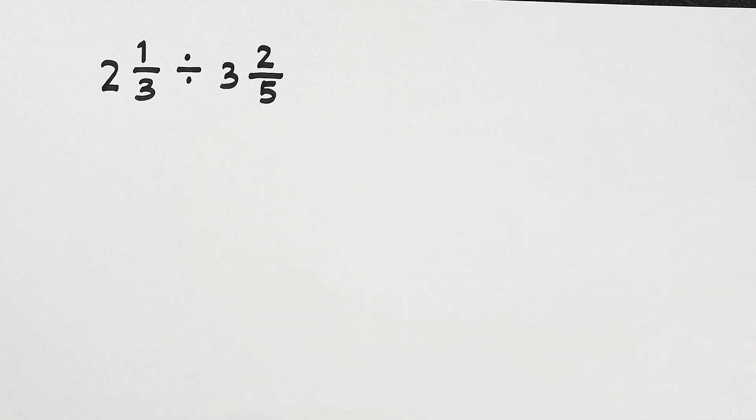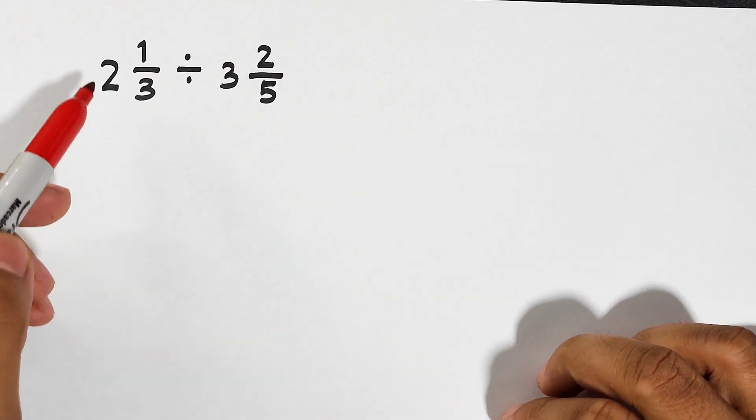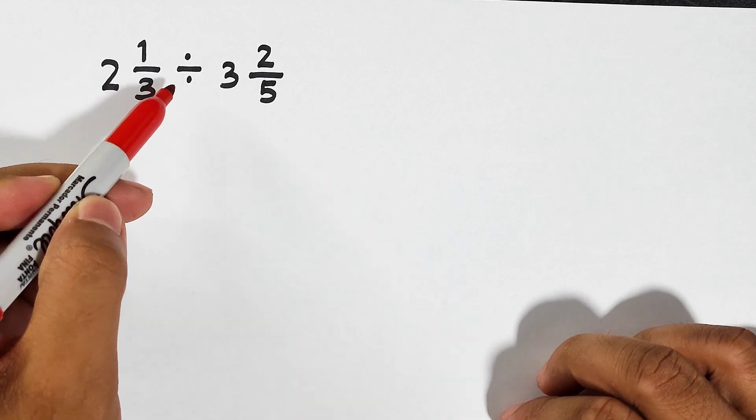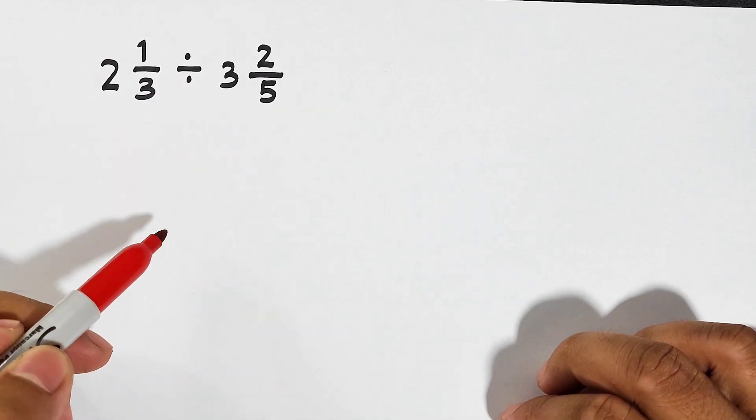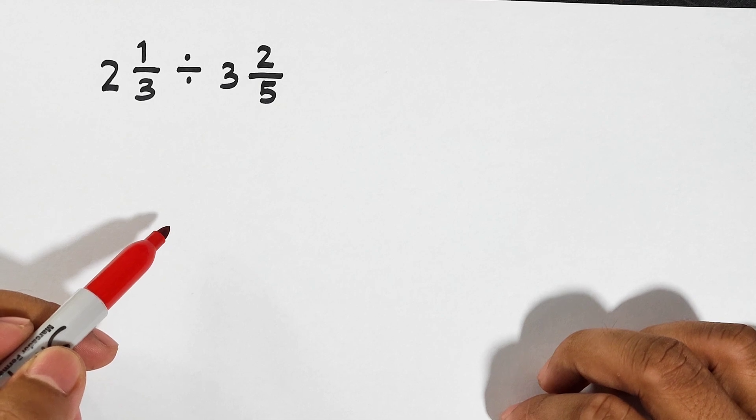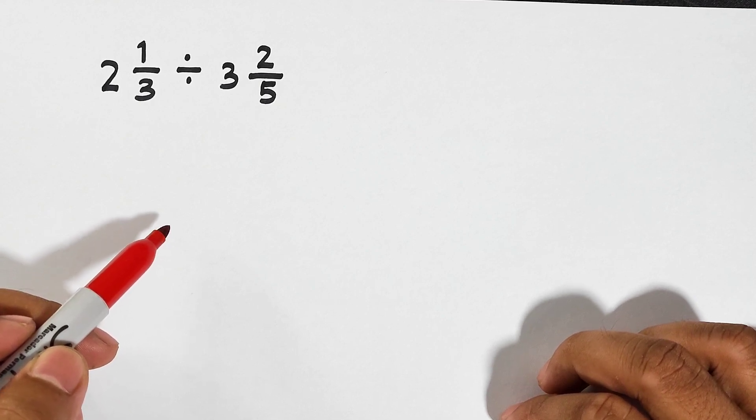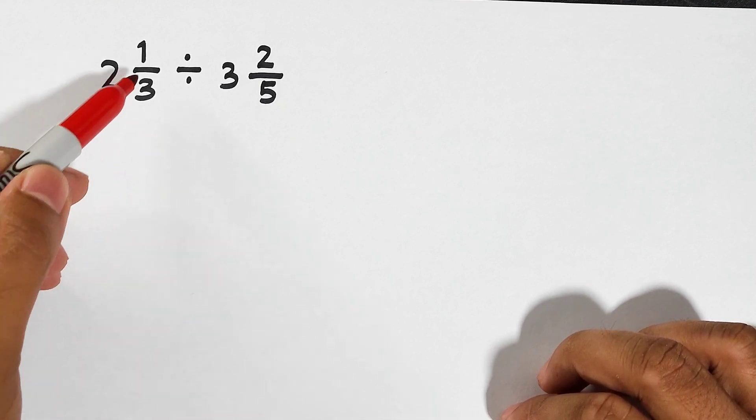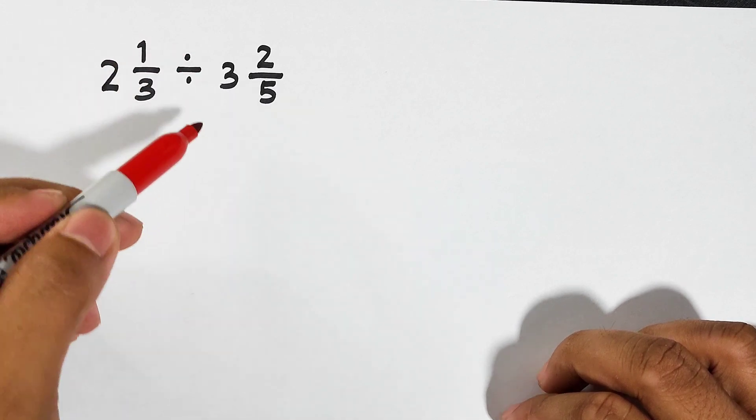Now let's get started. We have here 2 and 1/3 divided by 3 and 2/5. What is the first step in dividing these mixed numbers? First, you need to convert each mixed number into an improper fraction.